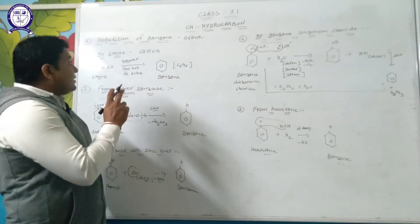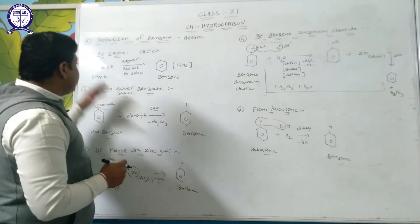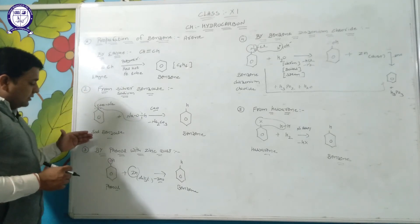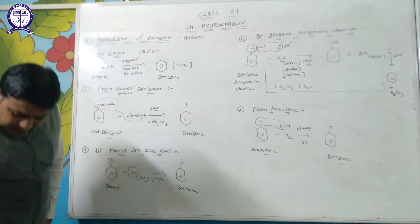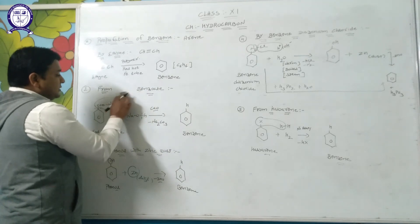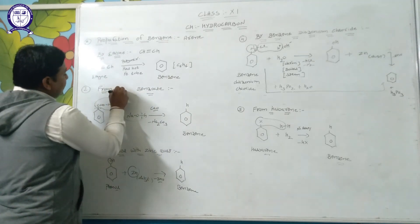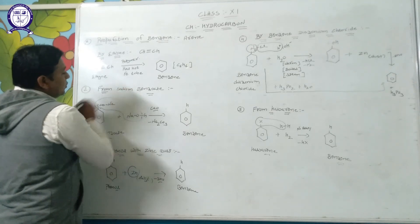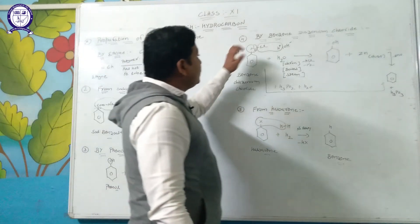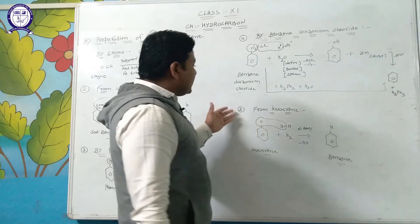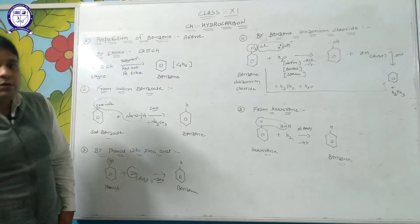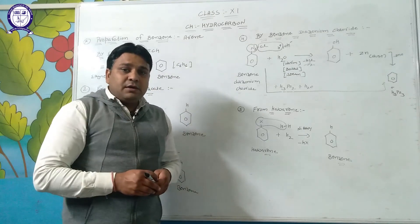So these are the preparations of benzene: first from ethyne, second from sodium benzoate, third by phenol with zinc dust, fourth by benzene diazonium chloride, and fifth from haloarene. In the next class we will discuss the chemical properties of benzene. Thank you.